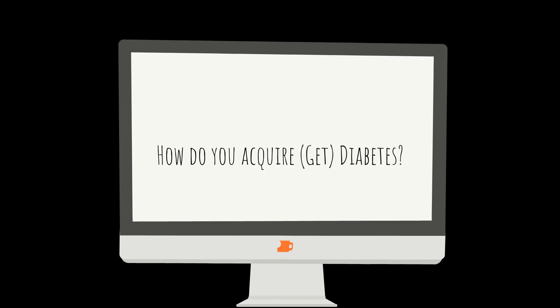How do you acquire, get diabetes? There are two different types of diabetes: type 1 and type 2 diabetes.